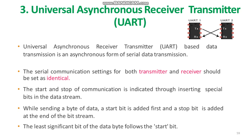Serial communication settings like baud rate, number of bits per byte, number of start and stop bits, parity and flow control for both transmitter and receiver should be identical. The start and stop of communication is indicated through inserting special bits in the data stream. While sending a byte of data, a start bit is added first and a stop bit is added at the end of the bitstream. The least significant bit of the data byte follows the start bit.